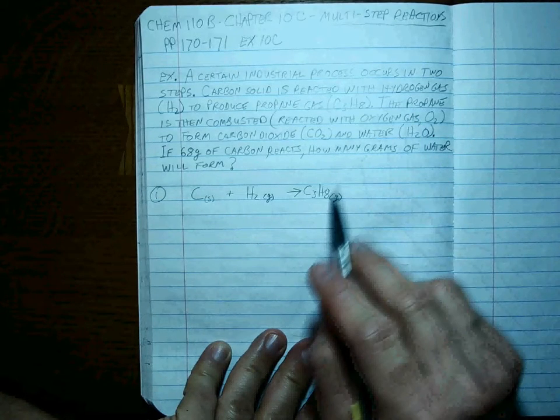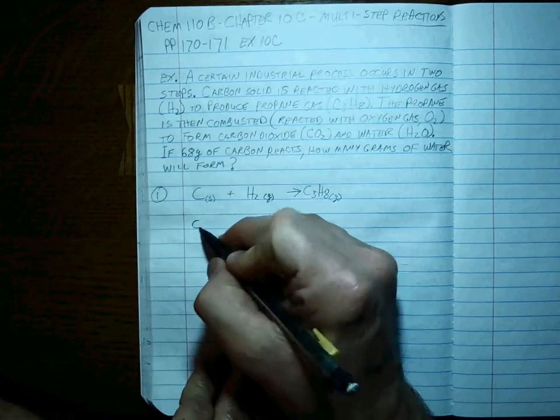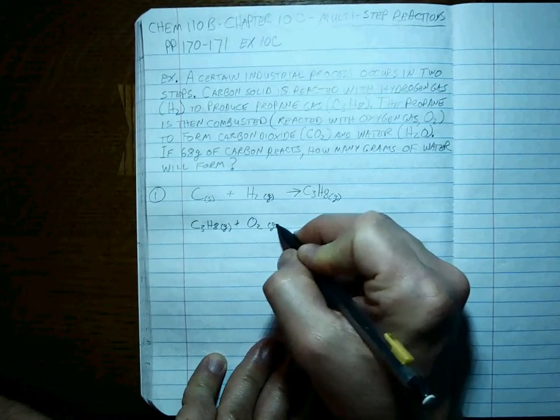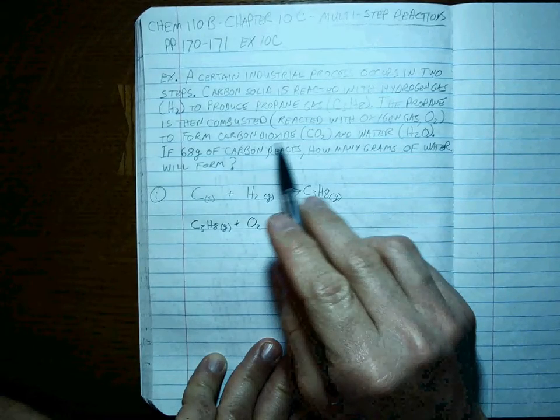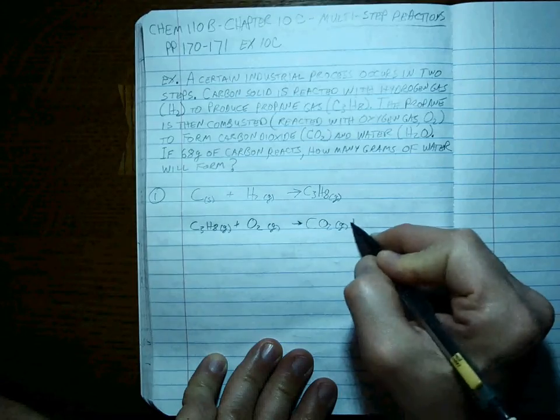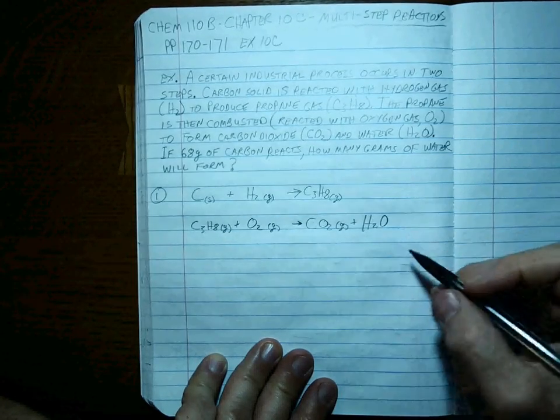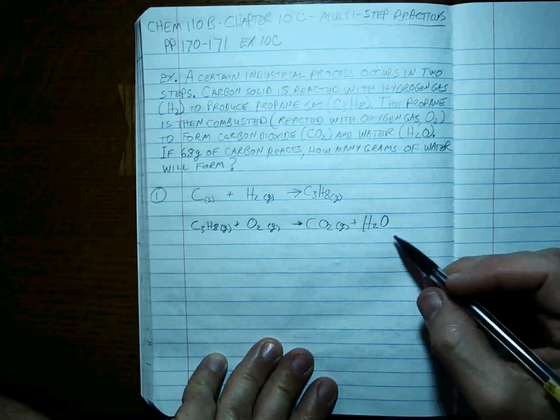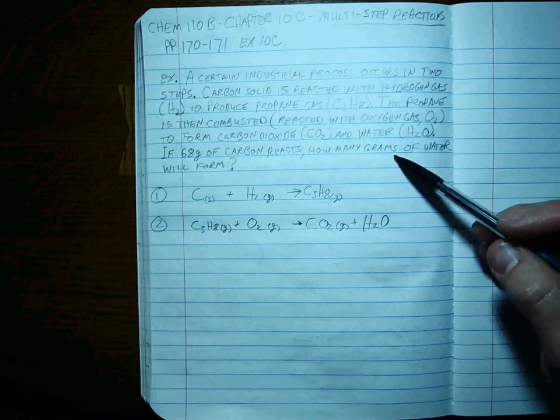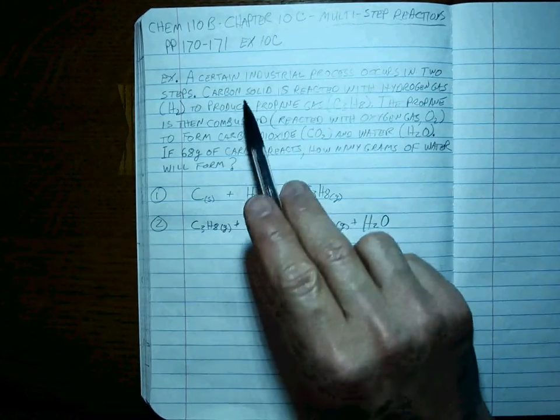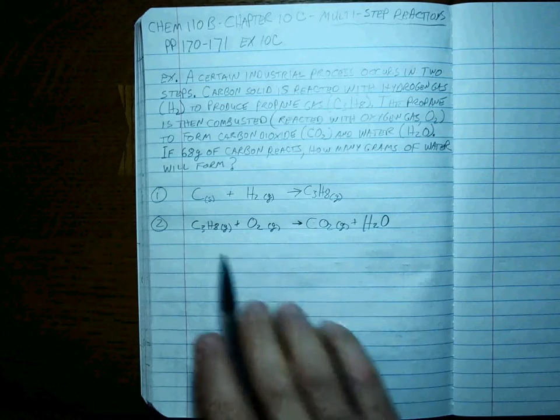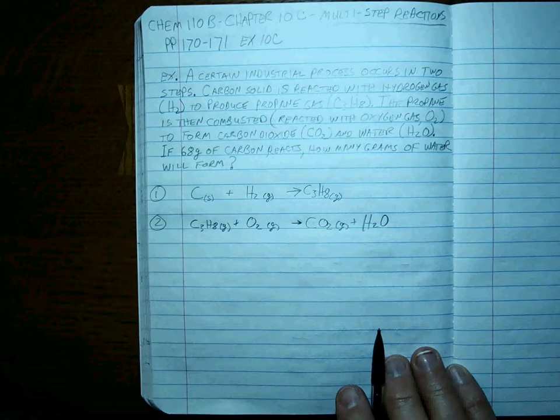See how the careful reading of the problem leads me to getting that first reaction? What's the second reaction? The propane is then reacted by combusting it with oxygen gas to form carbon dioxide, and you know that's a gas, and water. I'm not sure what the temperature is, so we'll just leave that as H2O. That's reaction number two. A careful reading of the wording of the problem with things like combusted or reacted, form, produce—these are big hint words for figuring out what's on the left-hand side and what's on the right-hand side for every reaction.